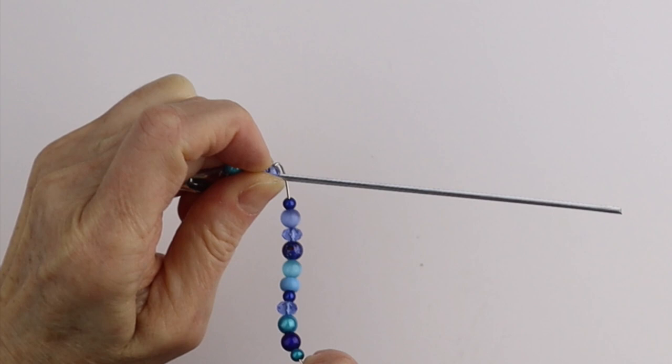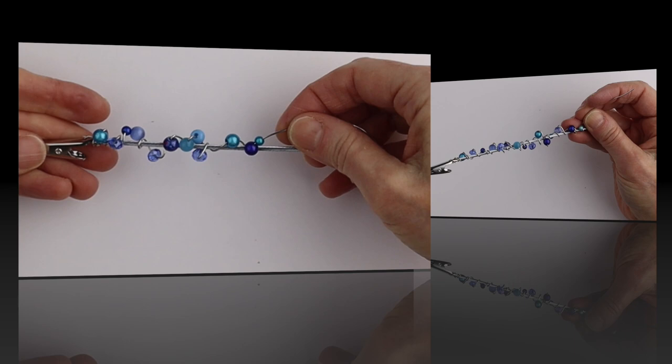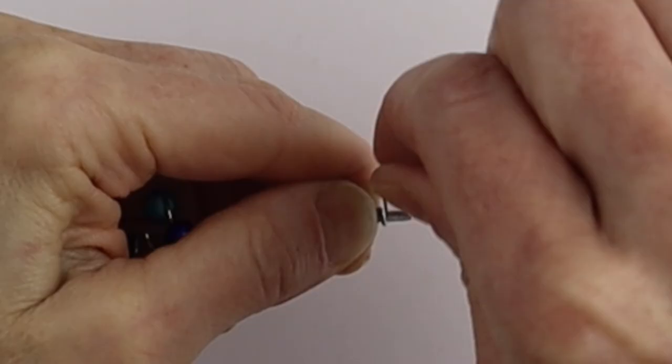If there's too much space you can push them down and add more beads. You can put as many beads on there as you want and when you get to the end we're going to wind it around like a coil.